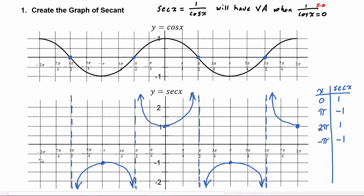Same thing here — as x approaches negative three pi over two on the cosine graph, its y values are going to zero but through negative numbers, so secant's y values are going towards negative infinity. If we plug in x equals negative two pi, we know that negative two pi on the unit circle is coterminal with zero, so we expect the y value here to be one. And as the y values of cosine get small, the y values of secant get big. So there's our graph of y equals secant of x.